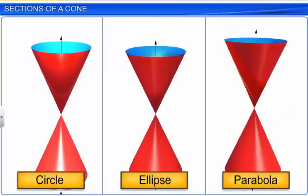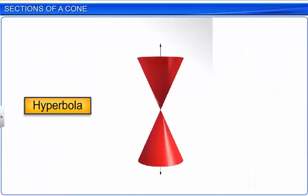Observe that in the formation of conic sections in the form of a circle, ellipse or parabola, the plane intersects only one nappe of the cone. However, in the formation of a conic section in the form of a hyperbola, the plane intersects both the nappes of the cone. Also note that in the formation of these conic sections, the intersecting plane does not pass through the vertex of the cone.